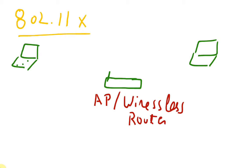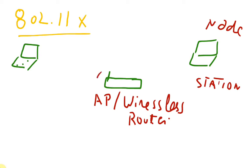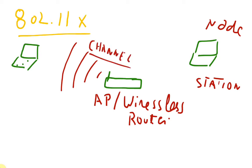So we have the wireless router, and we have nodes or stations — your laptop, desktop, mobile phone, tablet, or smart TV may be part of a wireless network. These devices communicate wirelessly through the air using different channels. The frequency commonly used for wireless communication in home and small office networks is around 2.4 gigahertz.